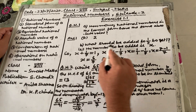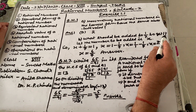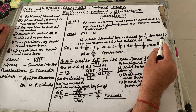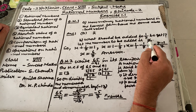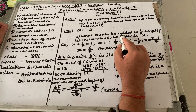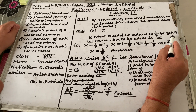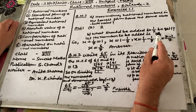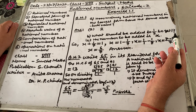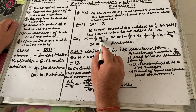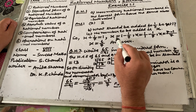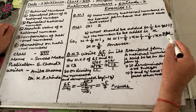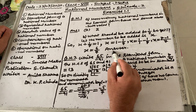Question 1, part B: what should be added to 1/7 to get 1? Let the number to be added be x. So we write: x + 1/7 = 1. Then x = 1 − 1/7, which equals 7/7 − 1/7 = 6/7. So the answer is 6/7.